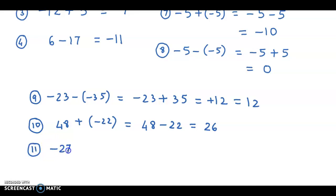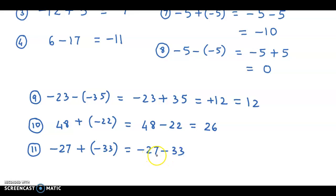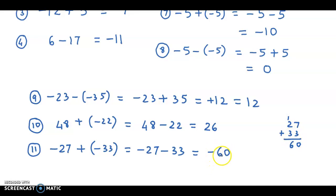Next example: minus 27 plus minus 33. A positive next to a negative gives a negative sign, so we have minus 27 minus 33. You've taken away 27 and taken away 33, so in all you've taken away 27 plus 33. Adding: 7 and 3 is 10, carry 1, that becomes 60. So the answer is minus 60.